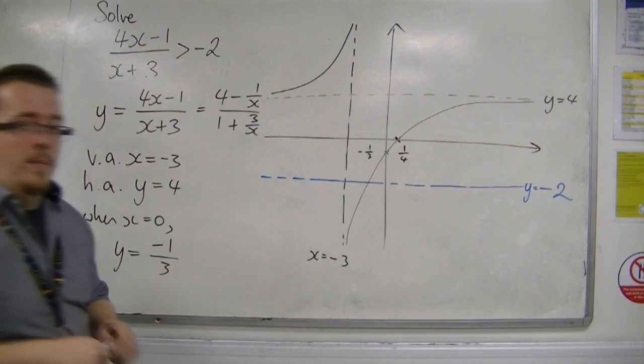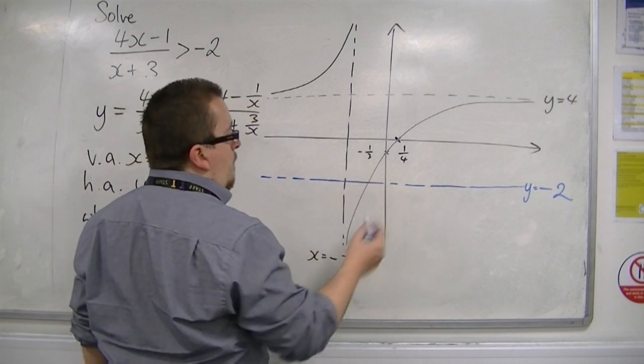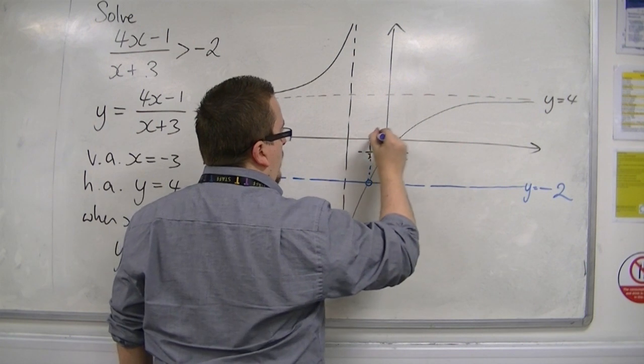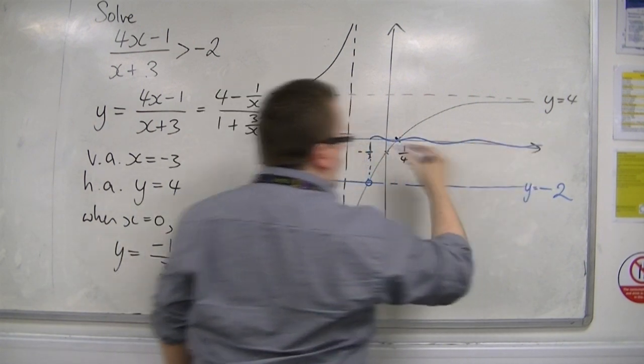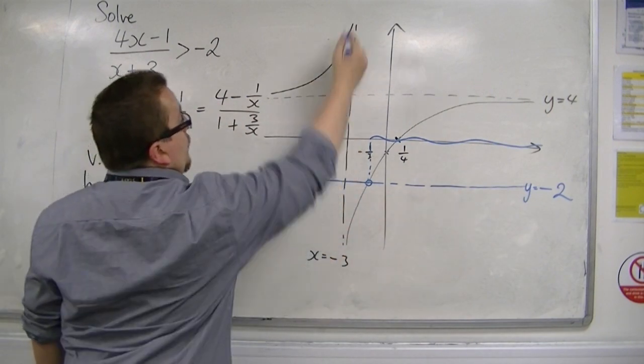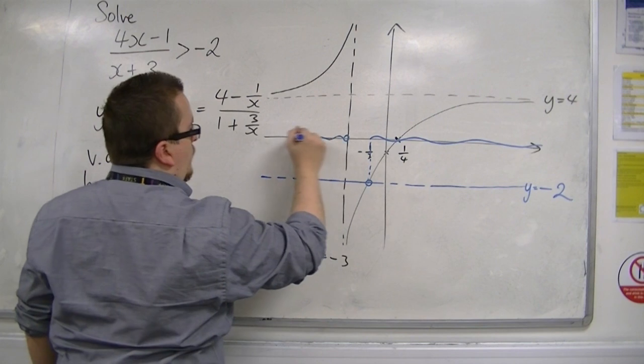So I need to determine where this curve is above minus 2. And it's above it, all of these values from that value onwards, and from this value onwards.